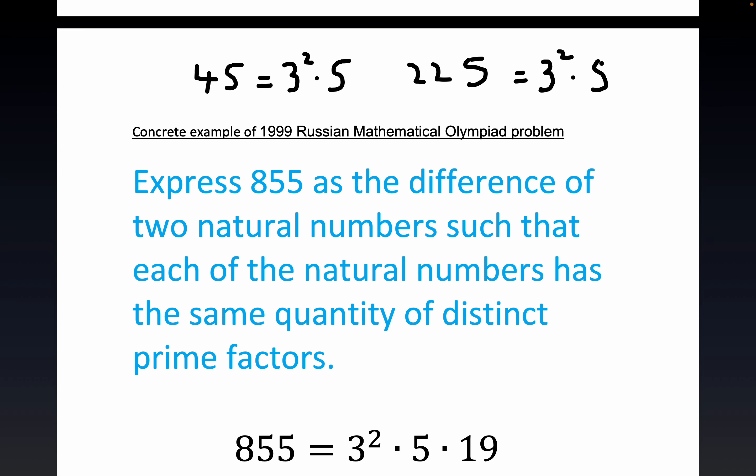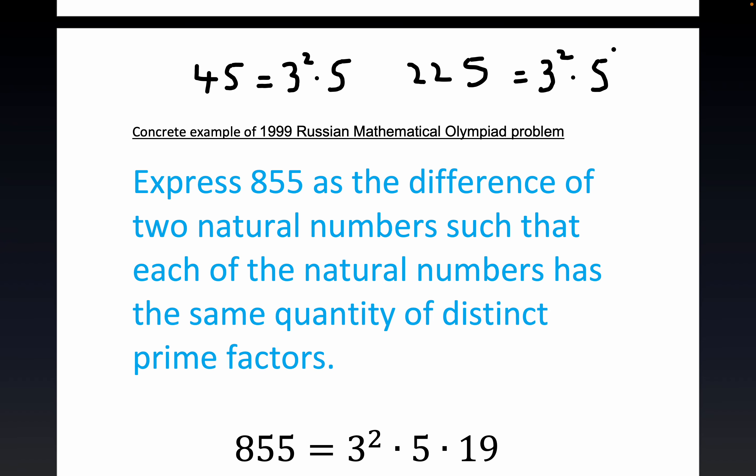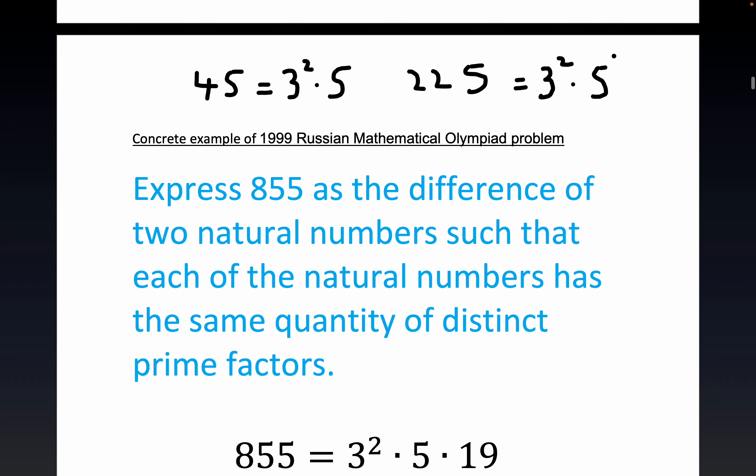And again these two numbers have the same number of distinct prime factors. They both have two distinct prime factors: 3, 5 and 3, 5. There's four primes here, but only two of them distinct. There's three primes here, but only two are distinct. That's the same spirit as these instructions.